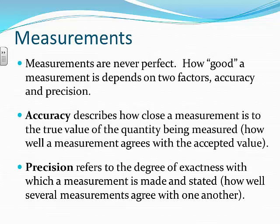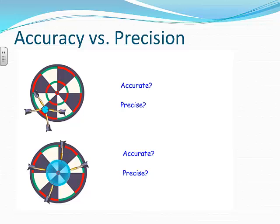Precision is a little different. It refers to the degree of exactness with which a measurement is made and stated, and it can also refer to how well several measurements agree with one another. We're going to explore these two concepts visually using dart boards. The goal on a dart board is to hit the center, known as the bullseye.